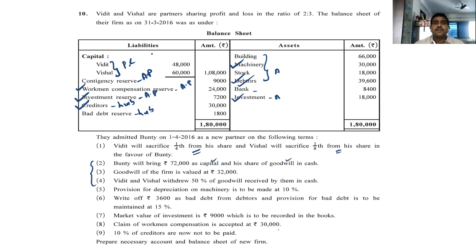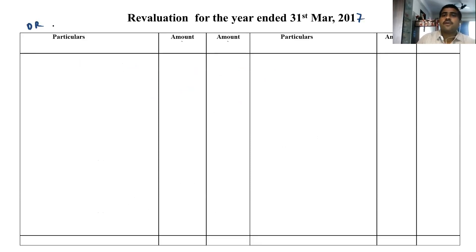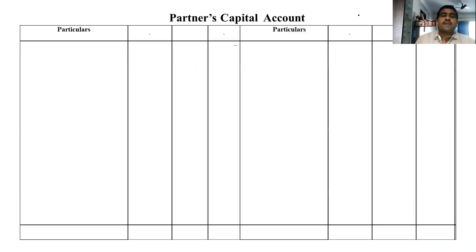So let's start the topic. Prepare the columns — revaluation account for the year ending 31st March 2016, partners capital account, debit and credit. And the names of the partners.